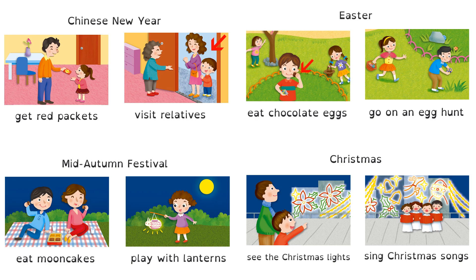Very good! Now let's say the vocabulary one more time. Chinese New Year: Get red packets. Go on an egg hunt. Mid-Autumn Festival: Eat mooncakes. Play with lanterns. Christmas: See the Christmas lights. Sing Christmas songs. Well done!